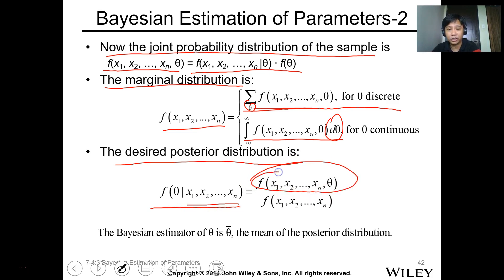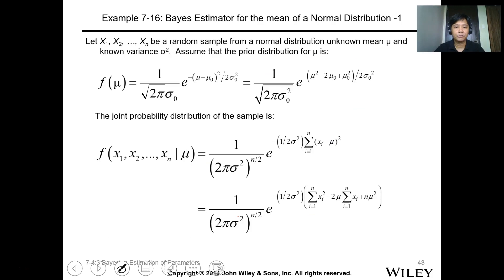To get this function, it equals the conditional probability times your f of theta using Bayes' theorem. From the marginal distribution, we can get f of x sub 1 to x sub n, which is summation with respect to theta for discrete, and integration with respect to theta from negative infinity to infinity for continuous. For the desired posterior distribution, we have f of theta given x sub 1 to x sub n. You just take the intersection divided by the marginal distribution. The Bayes estimator of theta, theta hat, is the mean of the posterior distribution.